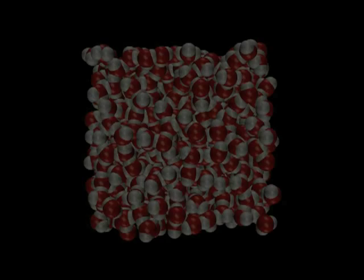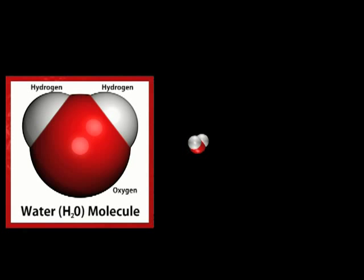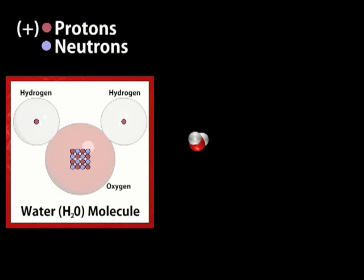In each water molecule, two hydrogen atoms are bonded to a single oxygen atom. Each atom is shown as a sphere, even though it actually consists of protons and neutrons in the nucleus, and electrons that travel around the nucleus at speeds that may approach the speed of light.